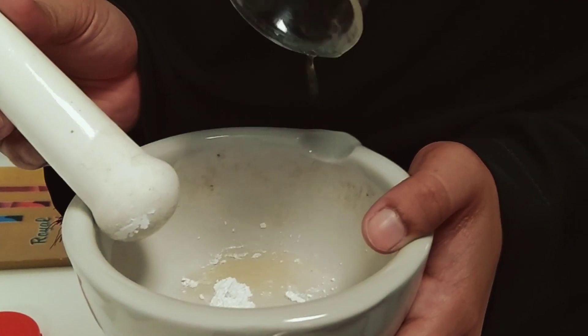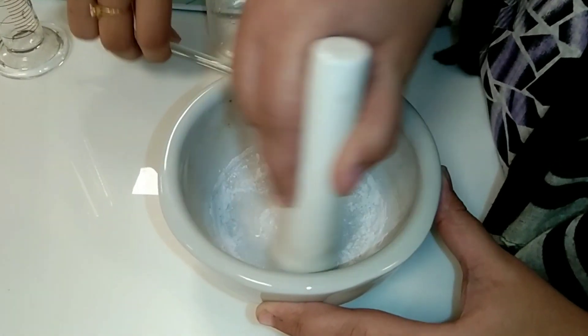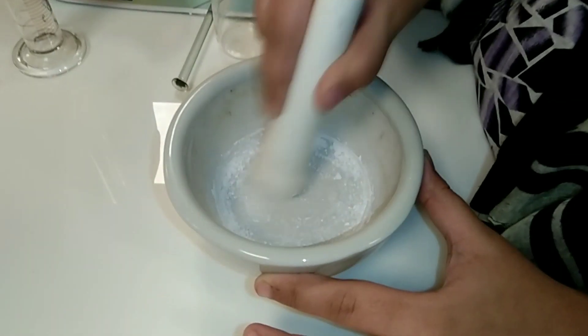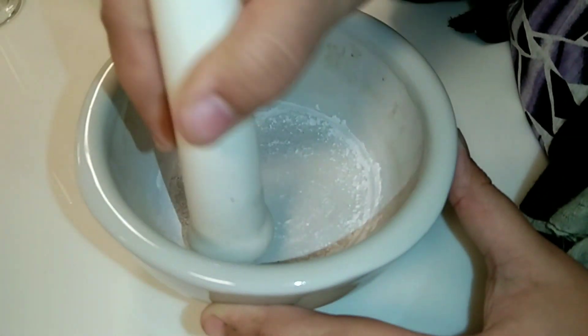Now we will triturate talc with the tincture and the citric acid—all three ingredients—and we will gradually add 8 ml of purified water into it.